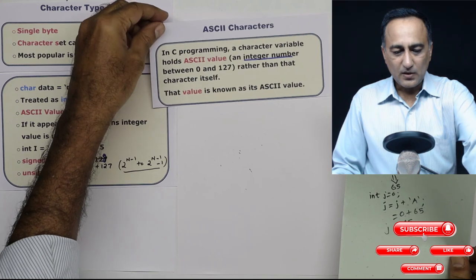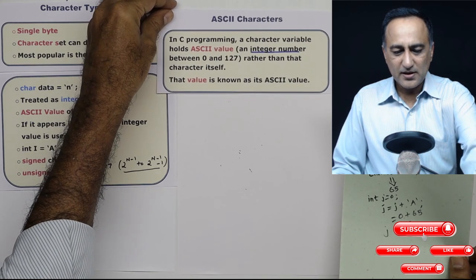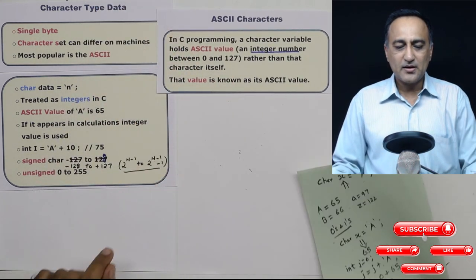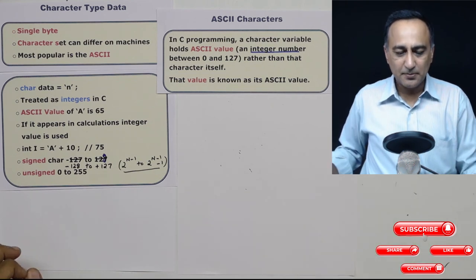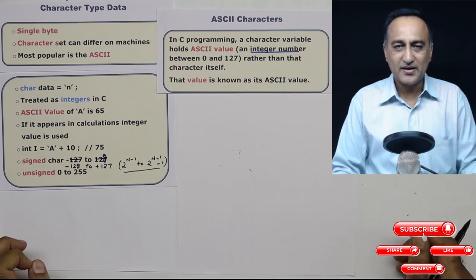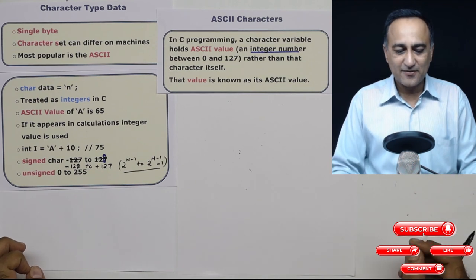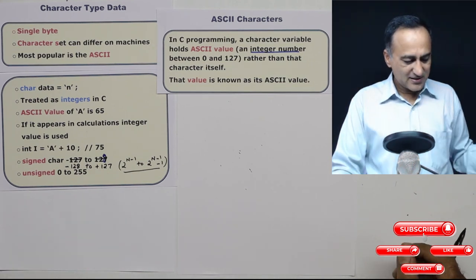Now, just to refresh something really important in C programming, a character simply holds an ASCII value or an integer number between zero and 127, rather than that character itself. That value is known as the ASCII value.